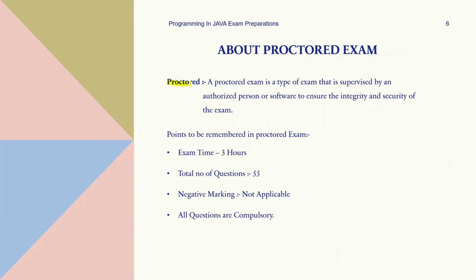The proctored exam is a three-hour exam with a total of 55 compulsory questions. Unlike the unproctored exam, there is no negative marking. All questions are compulsory, so make sure you attempt them all. The exam will test your programming skills and knowledge of Java programming concepts. It's conducted under the supervision of a proctor throughout the duration. Make sure you arrive at the exam center well in advance and carry all the necessary documents and materials.